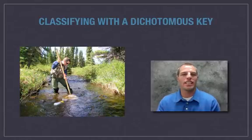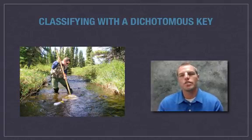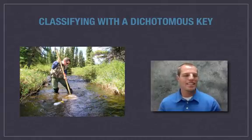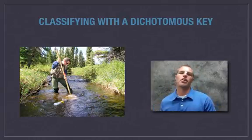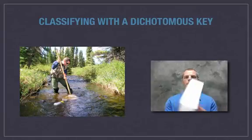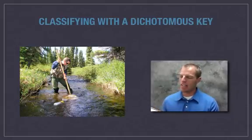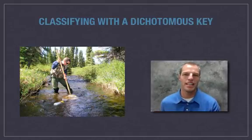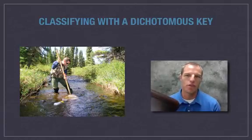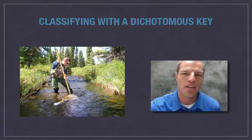What you see here on the left is a picture of a scientist working in the field. When scientists are classifying organisms specifically in the field, they use a tool called a dichotomous key. These are not small things — this one, for example, is for plants of just North Central Texas, not even the whole world. So these dichotomous keys are very, very large.